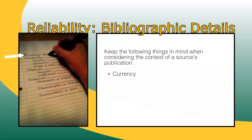Determine whether this is a current source or whether it is outdated. Keep in mind that the answer to this question will vary based on the discipline. Some disciplines, like medicine and technology, require the most up-to-date sources, so recent literature is usually published in the last one to three years, while some disciplines, like history or philosophy, may understand recent literature to have been published in the last ten or more years.